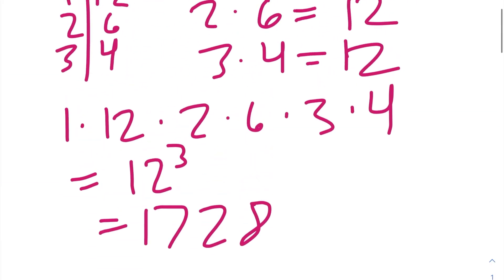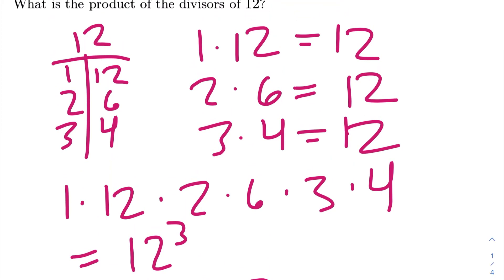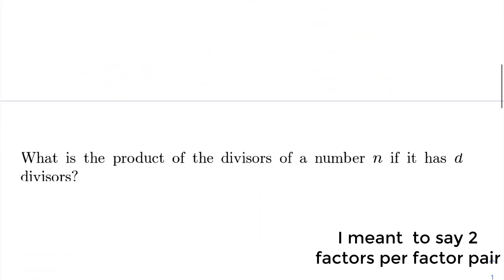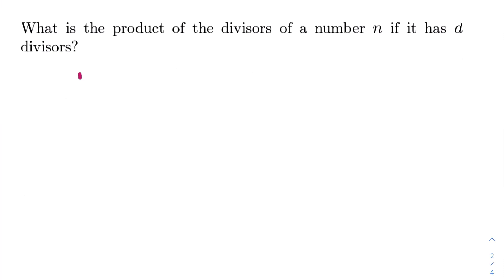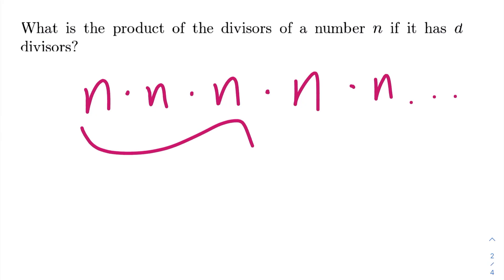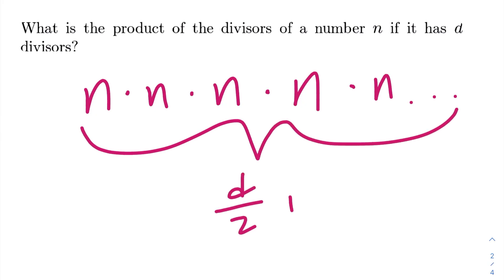Let's go back to our last problem. We see that 12 has 3 factor pairs, which is half of the number of factors 12 has, because each factor pair is made up of 2 factors. So if a number n has d divisors, it will have d divided by 2 factor pairs. So we'll have n times n times n... multiplied d over 2 times.